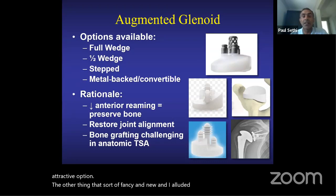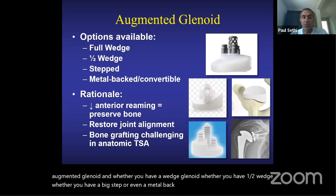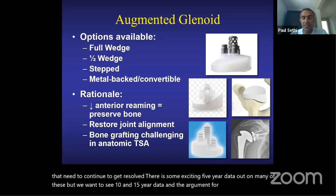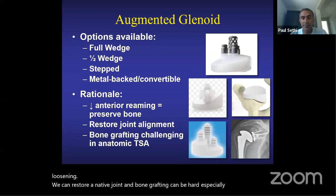Other new developments include augmented glenoid options: full wedge, half wedge, large step, and metal-back convertible designs. There is exciting five-year data on many of these, but we want to see ten- and fifteen-year results. The argument for augmented glenoids is that we preserve more bone, achieve less early loosening, restore native joint anatomy, and avoid the challenges of bone grafting — particularly difficult in revision cases when native bone is absent.